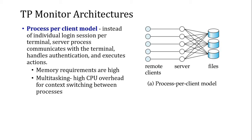There are different architectures of transaction monitors. The past architecture is the process-per-client model. As shown here, there are many remote clients. Each client is connected to a single server, and each server is connected to its own files at different locations. This is a costly solution because every client needs its own server connection — it is a one-to-one connection. Memory requirements are too high. These multitasking CPUs are connected to different file locations, making this model not suitable for larger volumes of transactions.